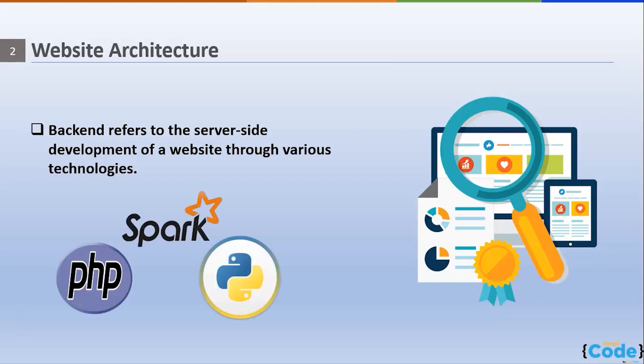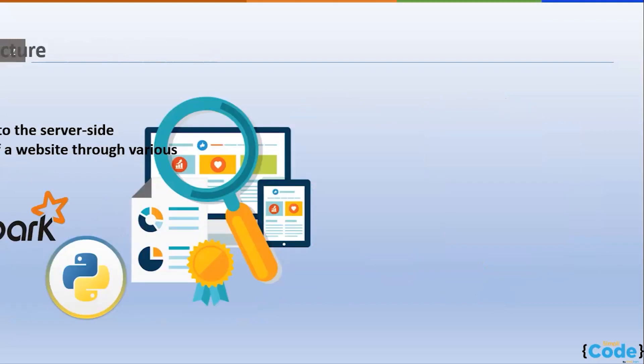The browser then interprets the response and displays the content on the screen. Several technologies are used for back-end development — JavaScript frameworks like Node.js and Next.js, Python frameworks like Django, Ruby frameworks like Ruby on Rails, C++ frameworks like Apache, and many more.